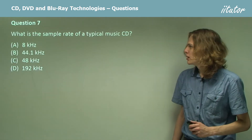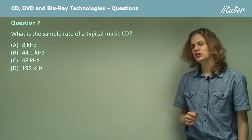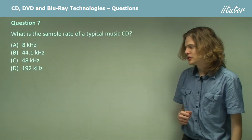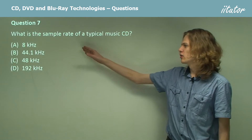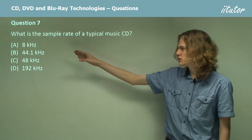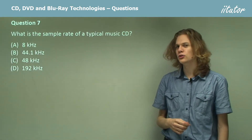Question 7. What is the sample rate of a typical music CD? We have a few options here: 8kHz, 44.1kHz, 48kHz, and 192kHz.